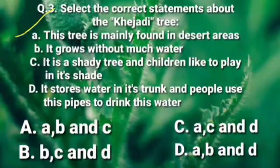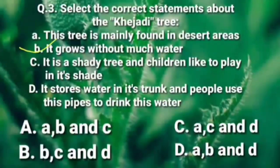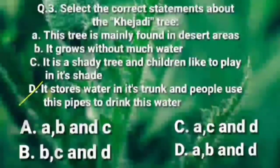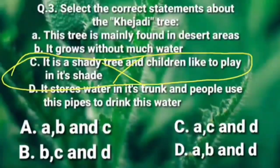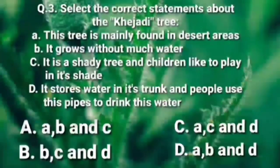If you want to see a desert tree, it lives in dry conditions. Option D states it stores water in its trunk. The correct answer is option D — the KZD tree stores water in its trunk.